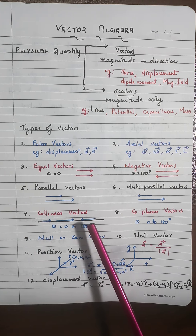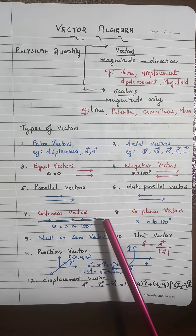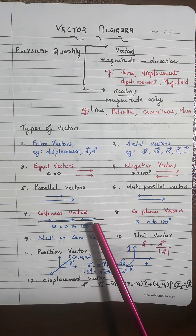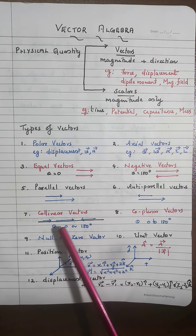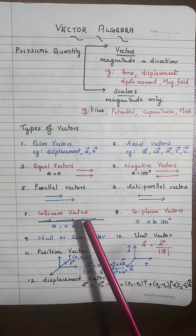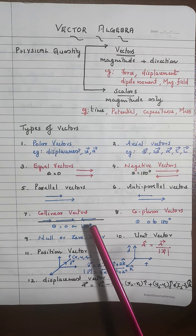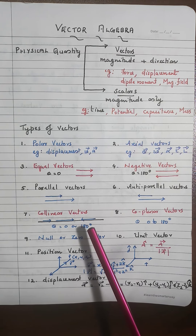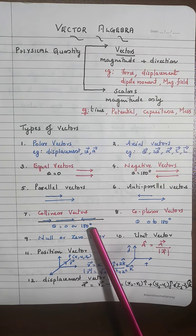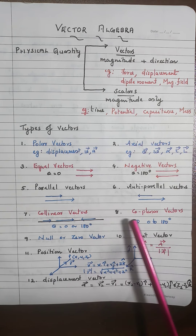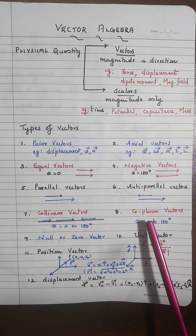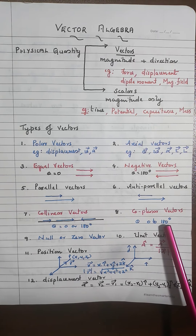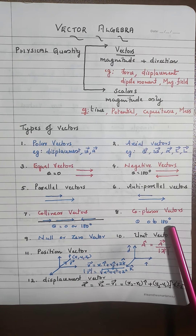Anti-parallel means vectors acting in opposite directions. Collinear vectors act along a line — sometimes with equal magnitude, sometimes not — but the angle of orientation must be 0 or 180 degrees; that is very important. Coplanar vectors act in a plane, and their orientation may range from 0 to 180 degrees.